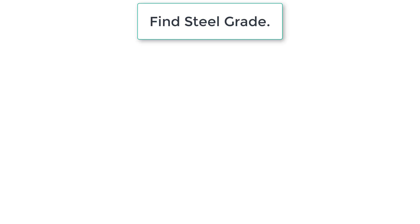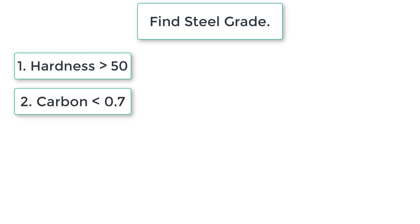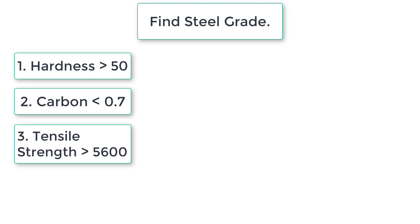Let's write a C program to grade steel based on some criteria. Criteria like hardness must be greater than 50, carbon content must be less than 0.7, and tensile strength must be greater than 5600. Based on these three conditions we need to grade the steel from 10 to 5.